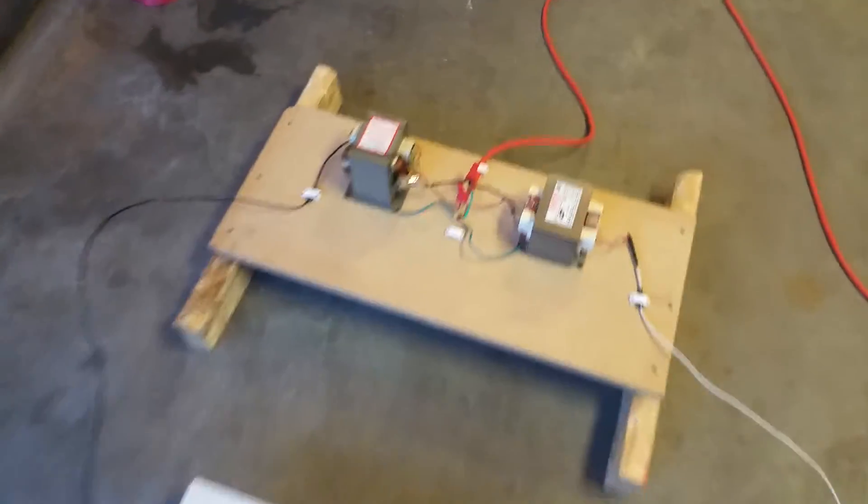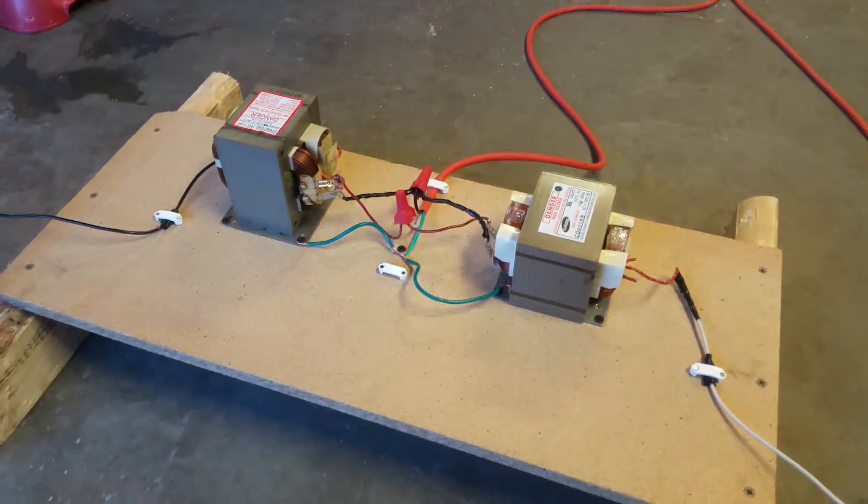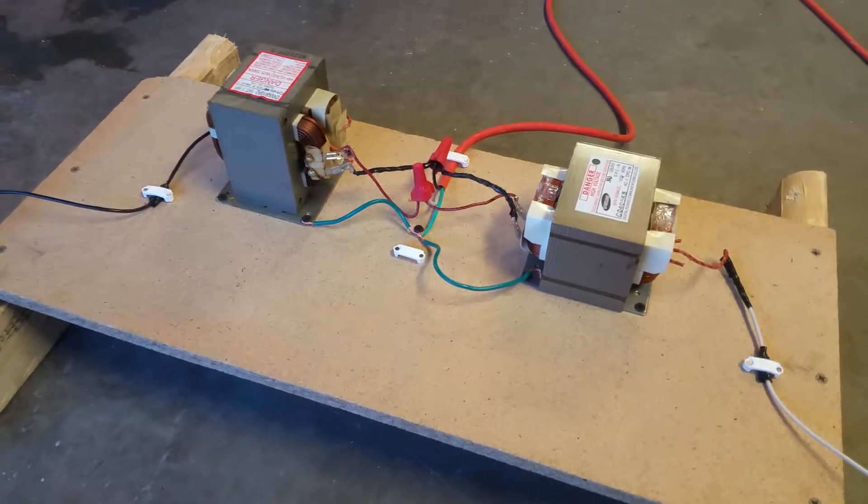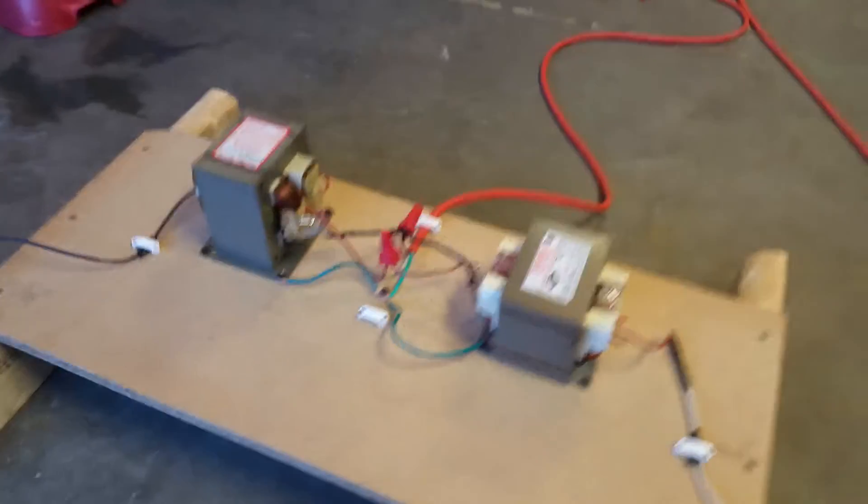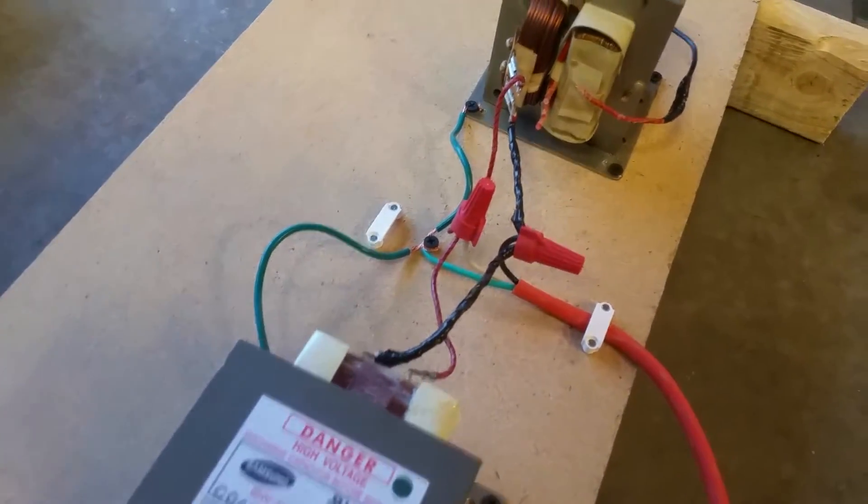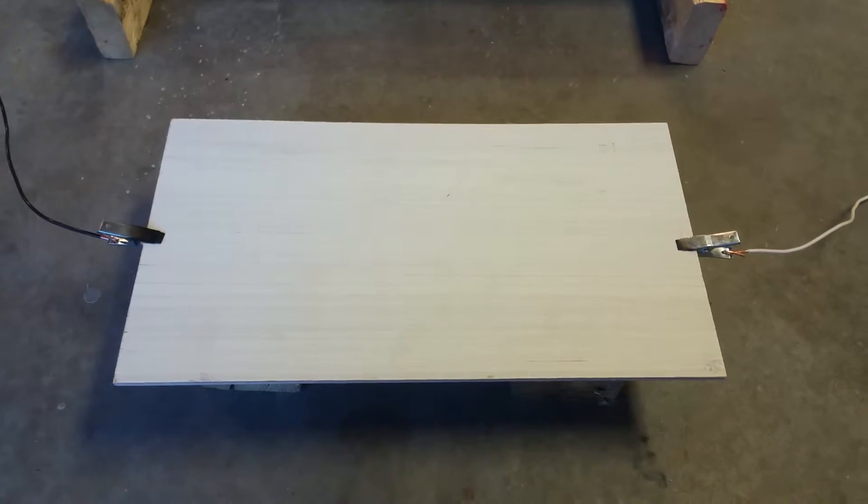Alright, here we have the assembly. Don't worry, it's not plugged in. This is two microwave transformers hooked together. We've got the low voltage sides which are powered, then on the high voltage side from each one goes to the metal clip on each side and our little piece of board here.